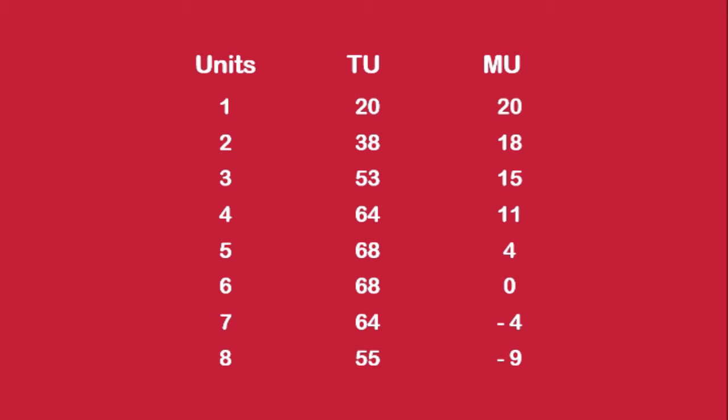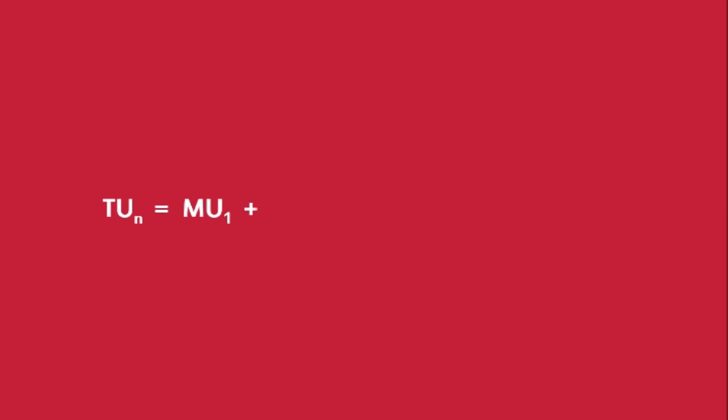Based on this, we can develop a formula to calculate Total Utility from Marginal Utility. The formula goes like this: Total Utility of N units of a commodity is equal to Marginal Utility of the first unit, plus Marginal Utility of the second unit, plus Marginal Utility of the third unit, through Marginal Utility of the nth unit.